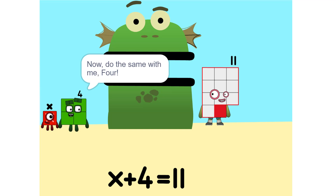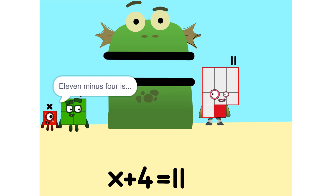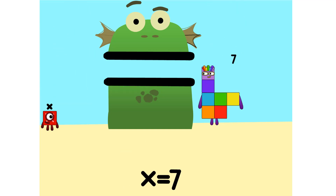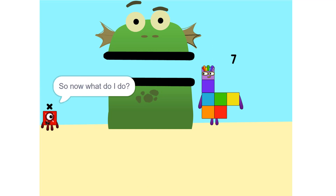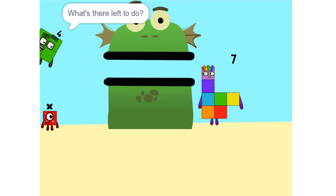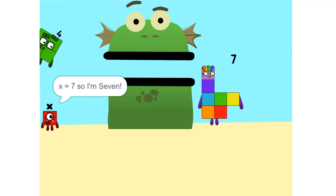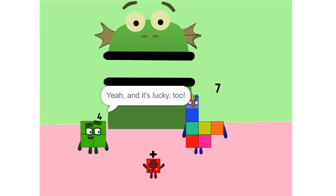Correct. Now do the same with me. 4. Oh, okay. 11 minus 4 is 7. So now what do I do? What's there left to do? X equals 7, so X is 7. Yeah, and it's lucky, too.